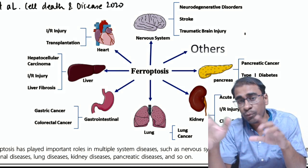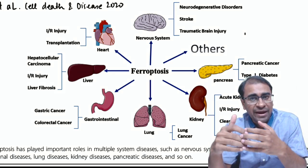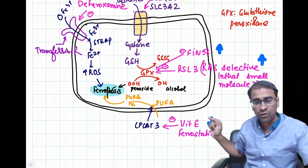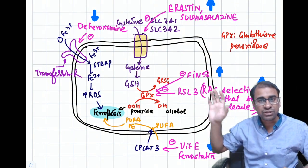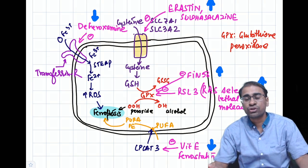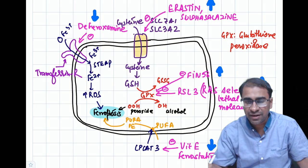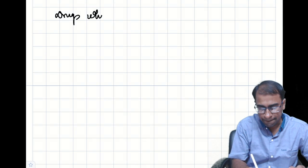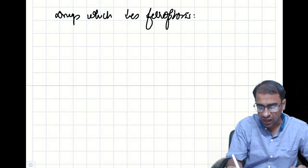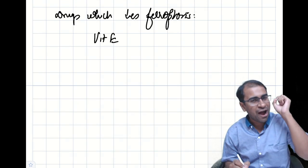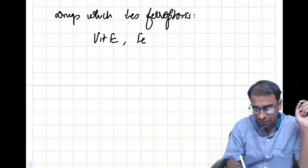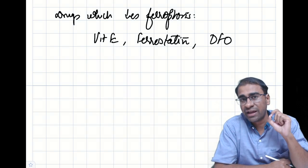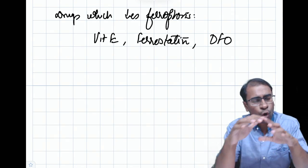Now that we know increased iron causes ROS and leads to cell death by ferroptosis, we can propose therapeutic strategies. Drugs that decrease ferroptosis — vitamin E (via its antioxidant mechanism), ferrostatin, and deferoxamine — are recently recognized as having therapeutic roles in reducing cell death across this cluster of diseases.